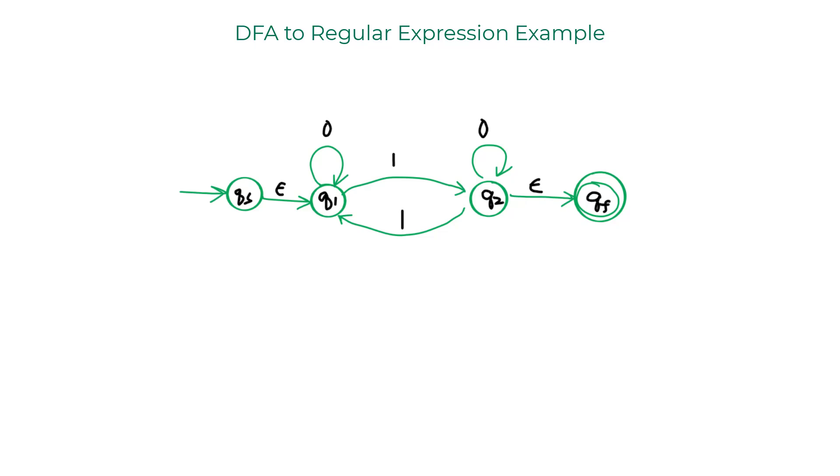Now the rule is you're going to connect the start state with the original start state of the DFA with an epsilon transition. And you're going to connect all of your accept state with the final accept state using epsilon transition. So this way we are enforcing that this GNFA has a single start state and a single accept state.